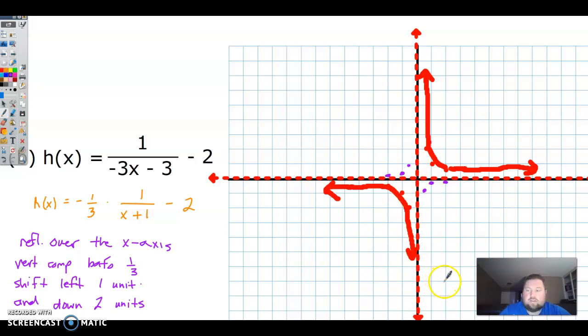I'm not going to draw anything in yet because I have to do my shifting. So we've got to go left one and down two. So vertical asymptote, left one, it's going to be here. And horizontal asymptote, down two, so it's going to be here.